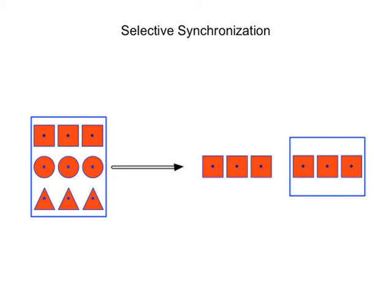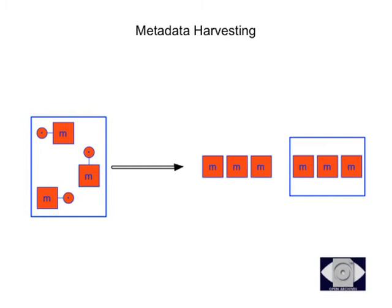Selective synchronization is another case: a source may have different types of resources — videos, text, images — and the destination is only interested in videos. And then XML metadata harvesting, as specified by the Protocol for Metadata Harvesting, is just a special case, because in this worldview XML is just resources with URIs. You reference the URI and get the XML metadata back, so it fits within the Resource Sync picture as well.